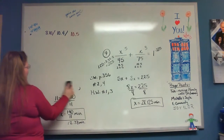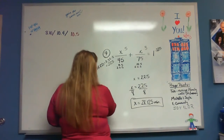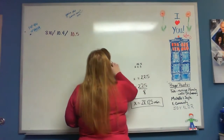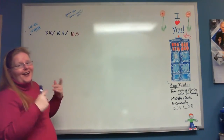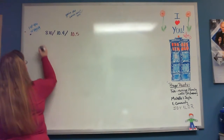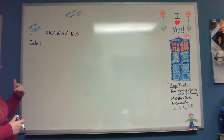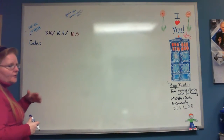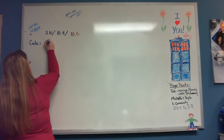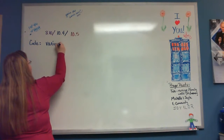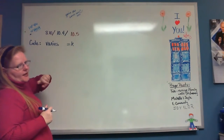Back when we first started, we talked about how there was a code — as long as you knew the code you were going to be okay with word problems. Today we're going to add to that code. When we see the word 'varies,' that means equals K. Anytime we ever see that, we write equals K.